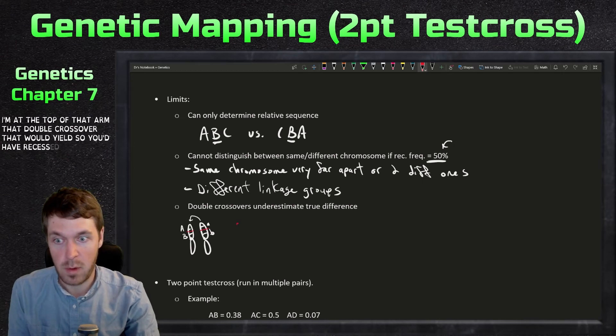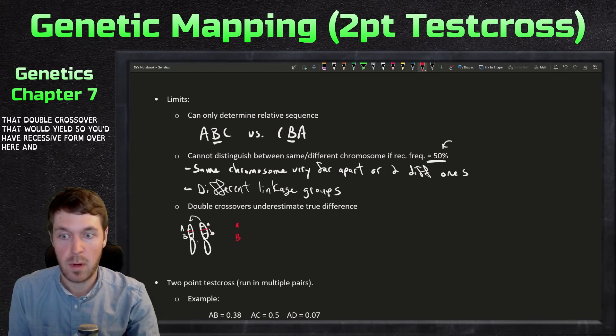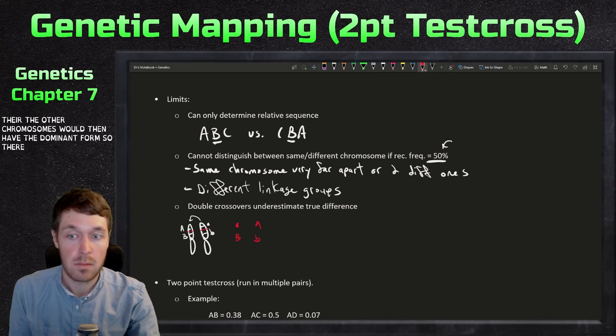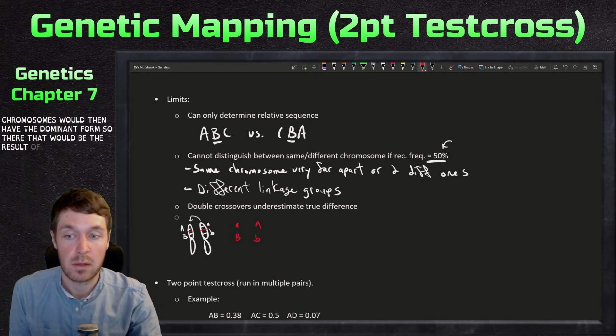That double crossover—so you'd have recessive form over here and dominant form there. The other chromosome would then have the dominant form. So there, that would be the result of a single crossover.